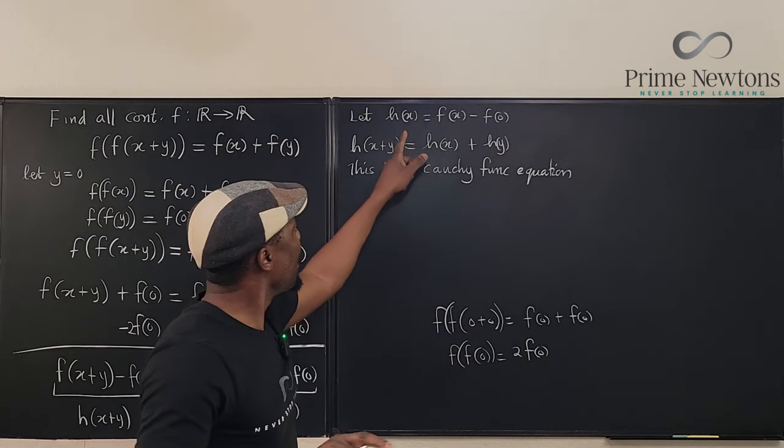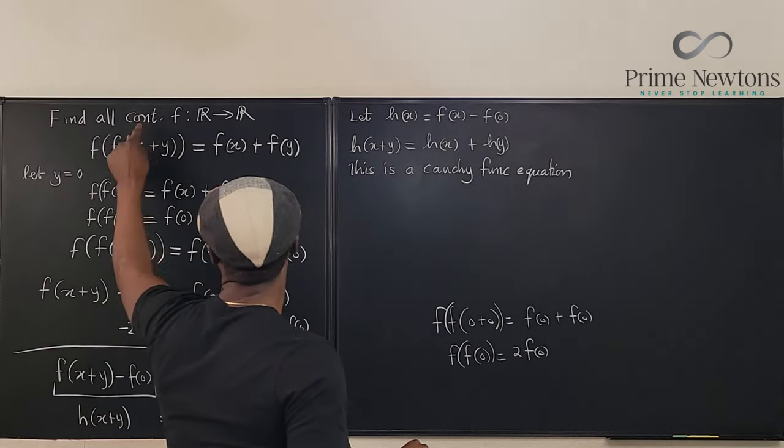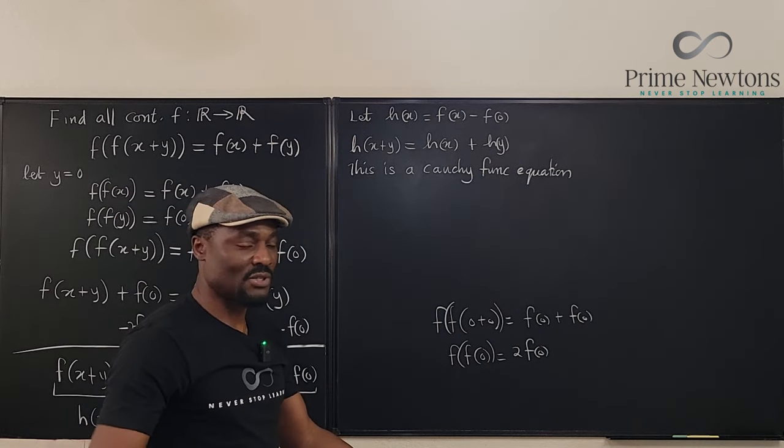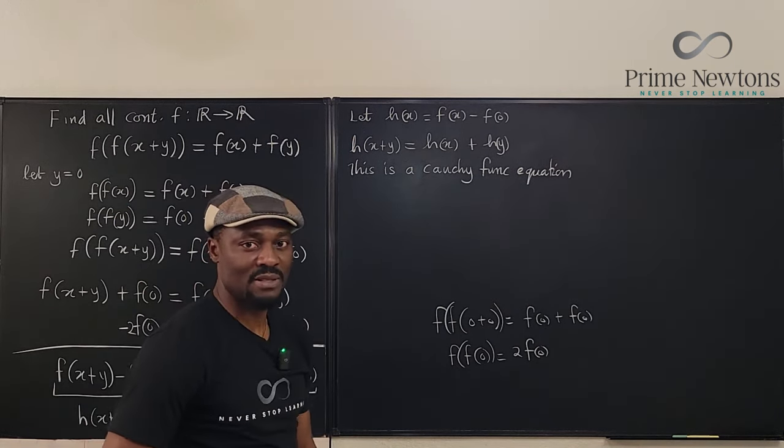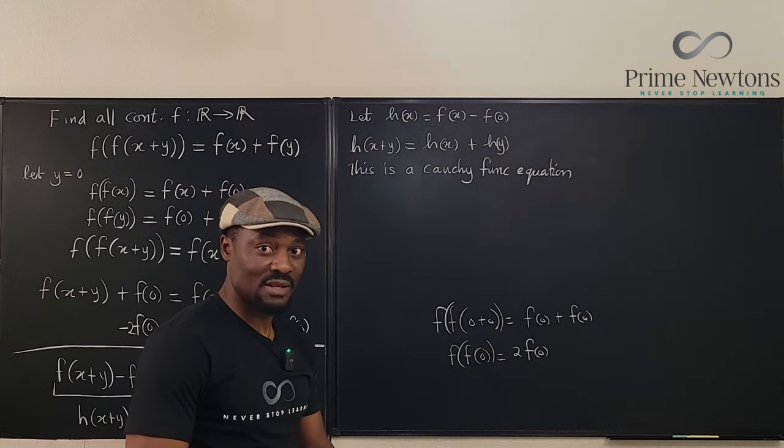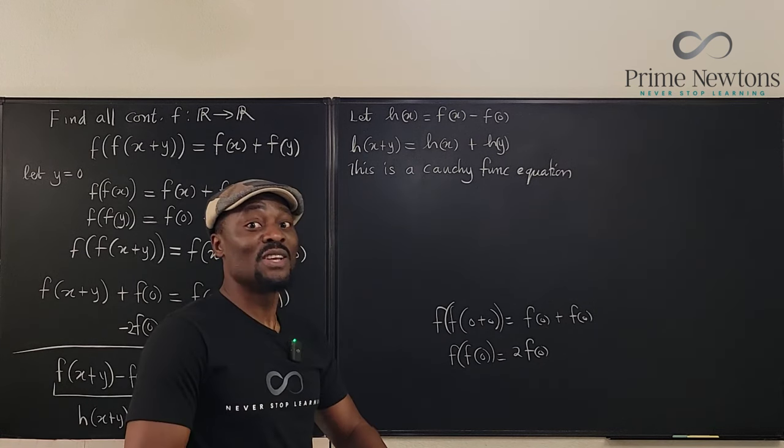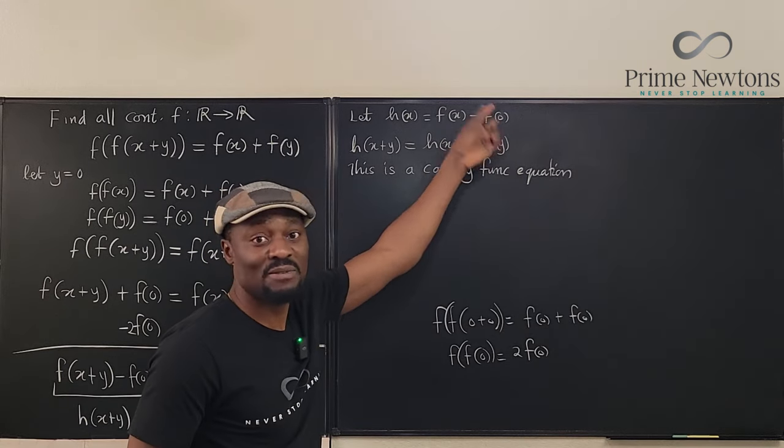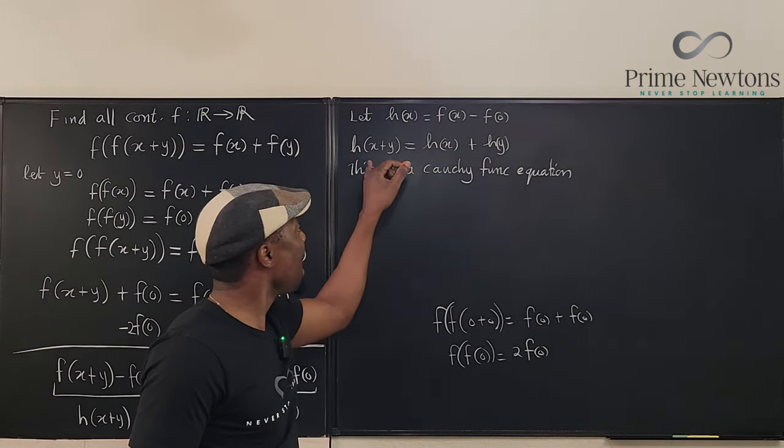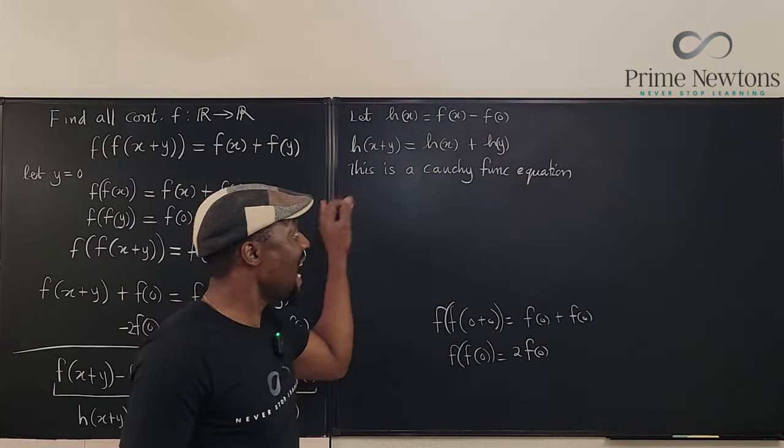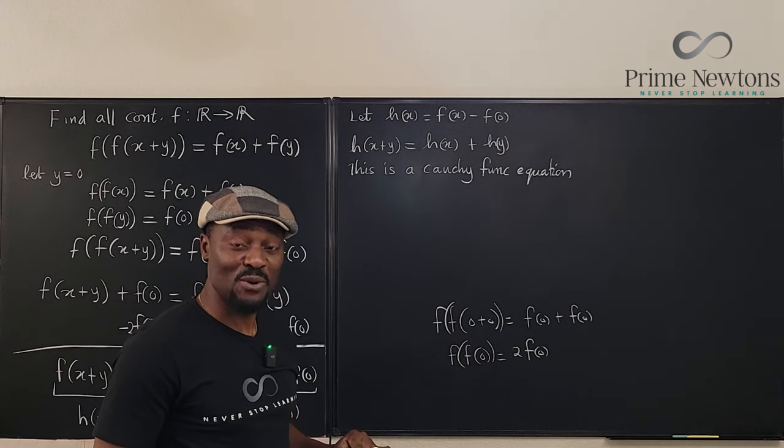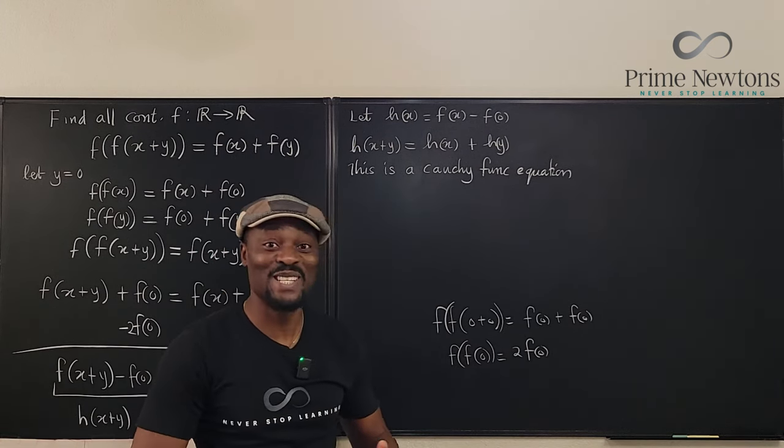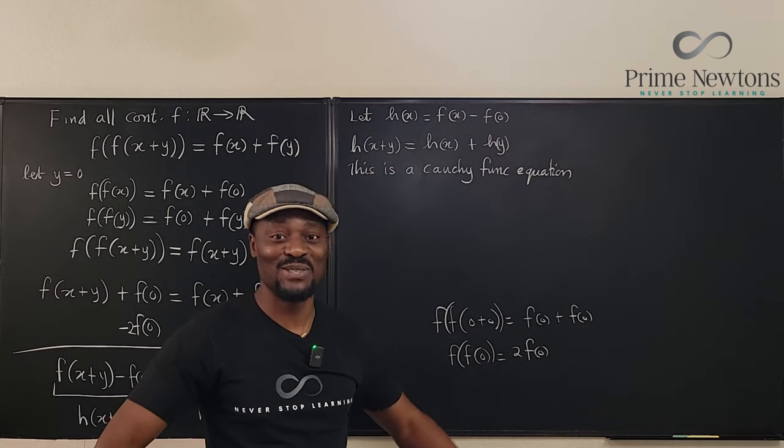Because the f we're looking for is a continuous function, we know h also is continuous. Because you're just subtracting a constant from it. Subtracting a constant from a continuous function means you still have a continuous function. We're just subtracting f of 0 from it. So h of x is continuous, and it is a Cauchy functional equation. And if a Cauchy functional equation is continuous, you already know the solution.